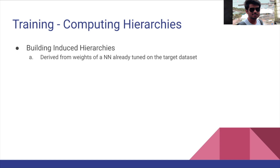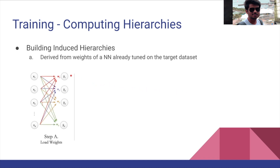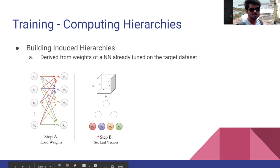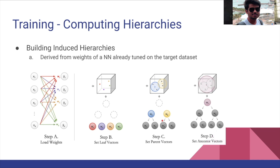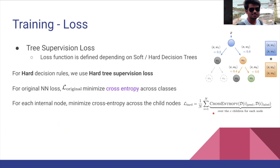Now let's talk about computing the hierarchies during training. We load the weights of the pre-trained neural network's fully connected layer weight matrix. Each column Wi is a representative vector assigned to a leaf node. We then average W1 and W2 to form W5, and W3 and W4 to form W6. To find the ancestor nodes, W7's value is the average of all its leaves — W1, W2, W3, and W4 — not the internal nodes.